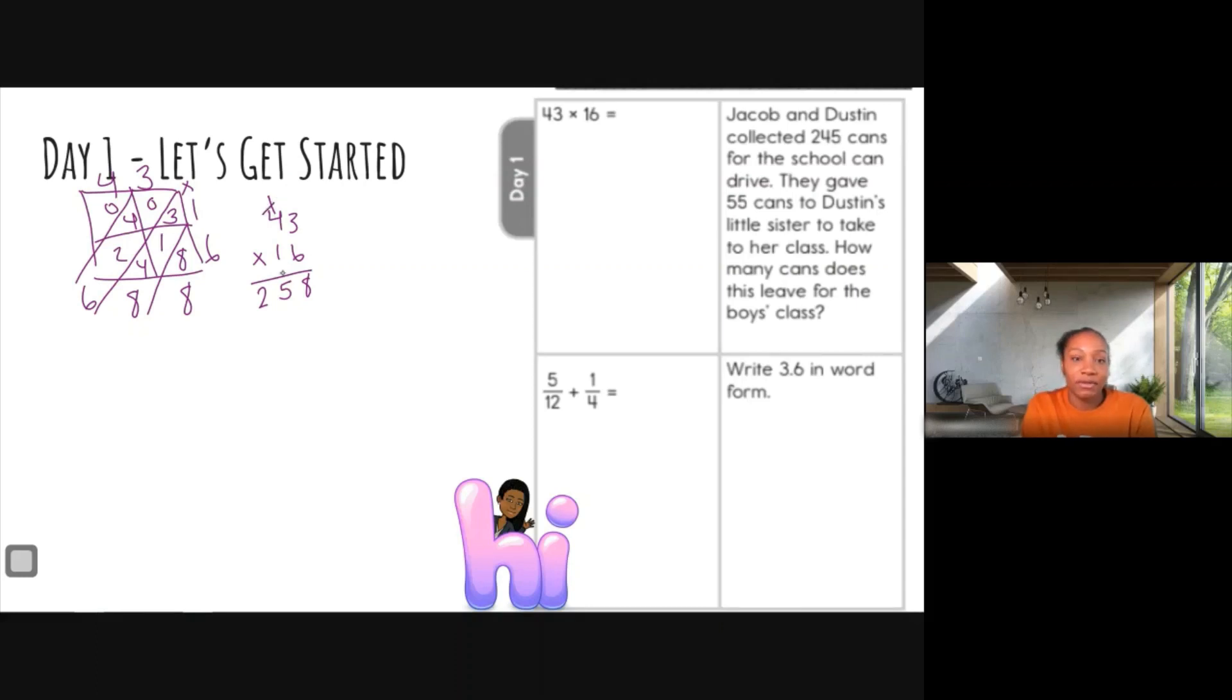Okay, so we're done here. We're going to cross that 1 out so I don't get confused. We're going to bring down our placeholder 0. 1 times 3 is 3, and 1 times 4 is 4. And I'm going to add that up. 8 plus 0 is 8, 5 plus 3 is 8, and 2 plus 4 is 6. So either way that you choose to multiply, your product should be 688.